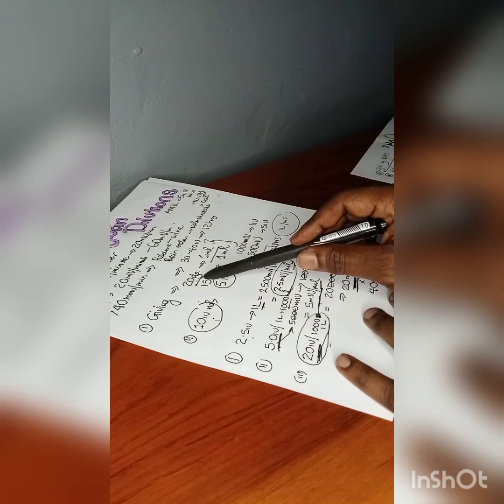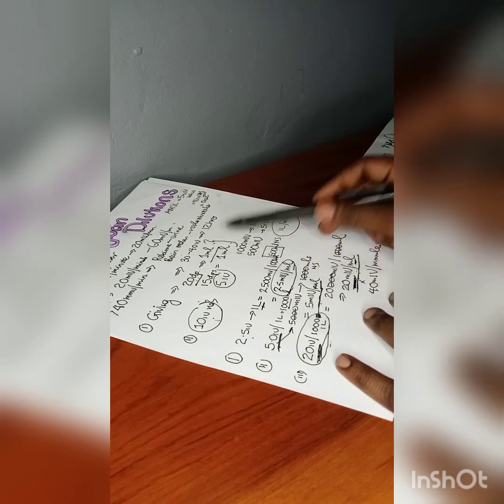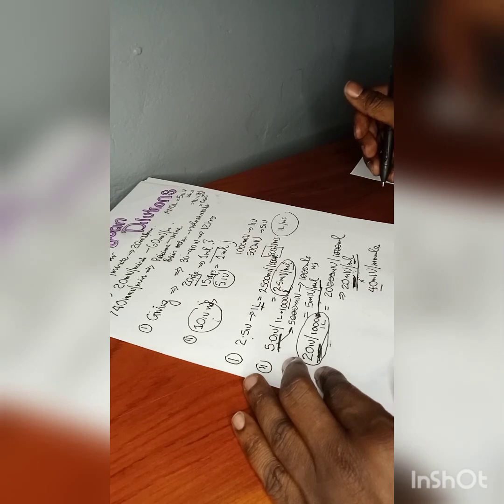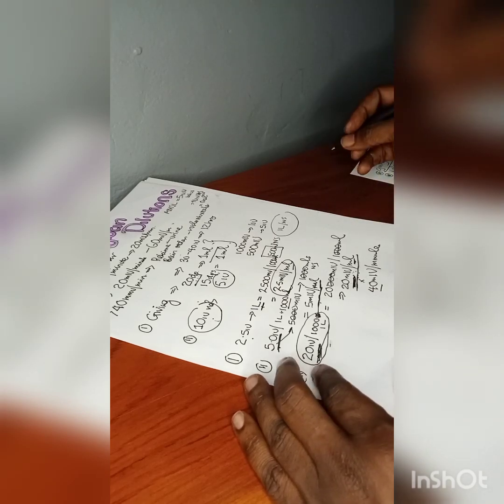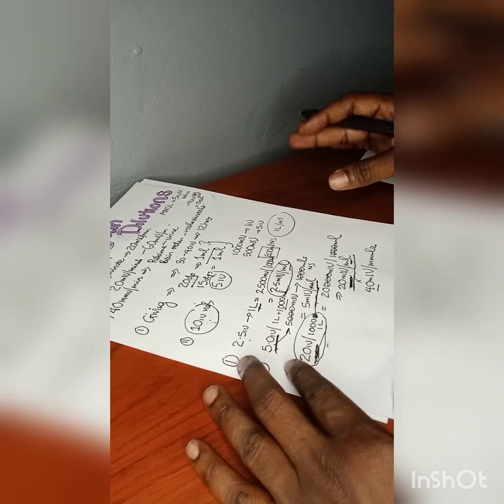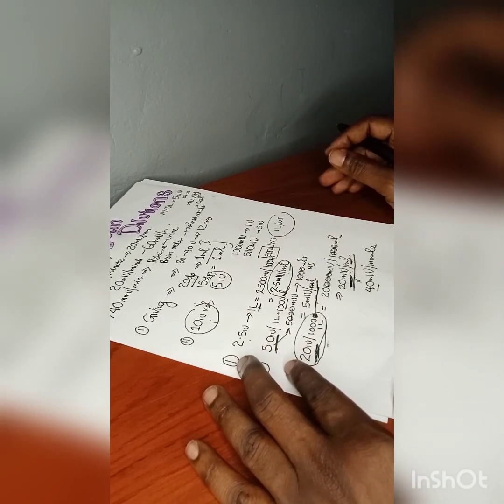If the uterus does not contract, you can double the dose to 40 milli-international units per minute by going to 40 drops per minute. You continue increasing as needed. Once the uterus contracts, you maintain the oxytocin at the rate at which it achieved contraction.